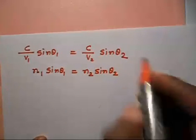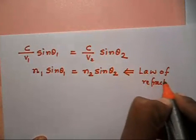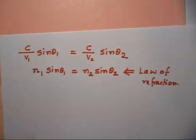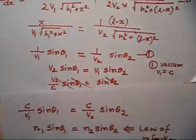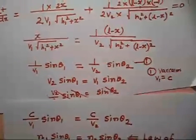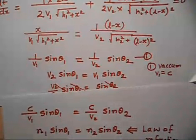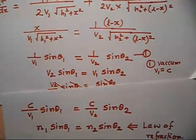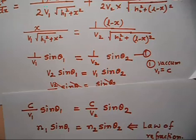So we have proved the law of refraction using Fermat's principle of minimum time. You can similarly prove the law of reflection using Fermat's principle. There are many things that can be proved using Fermat's principle of minimum time. You can copy it out.